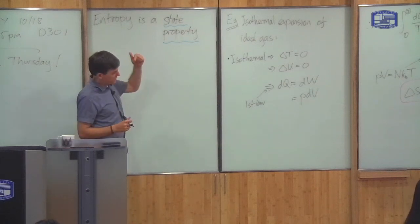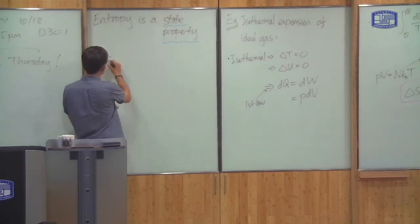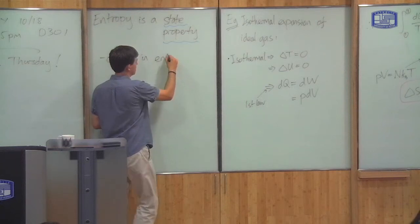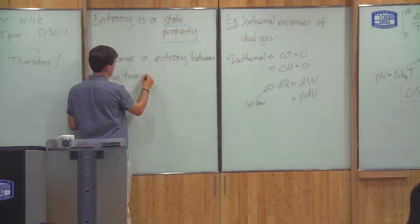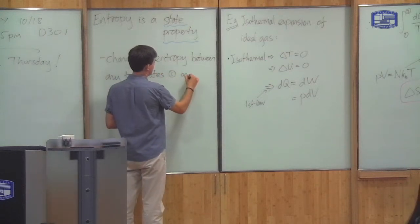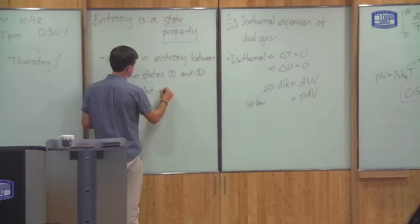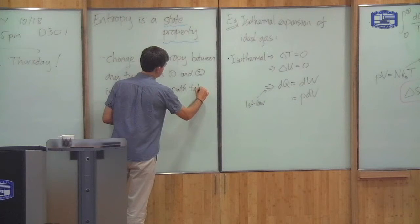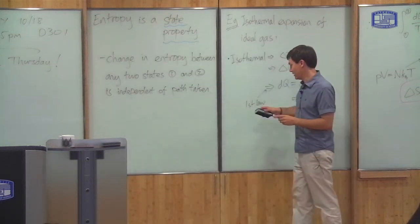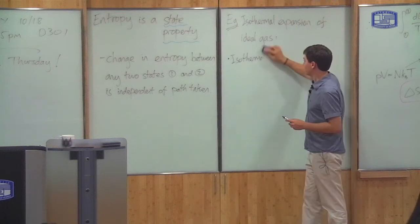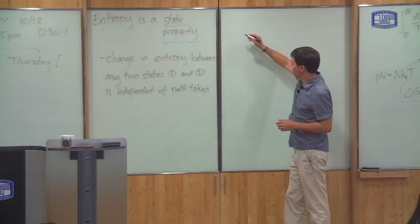What this means is that the change in entropy between any two states of a system is independent of the path you take between those two states. The change in entropy between any two states, one and two, is independent of the path. That's what it means to be a state property. I can illustrate this in the pressure-volume diagram as follows.